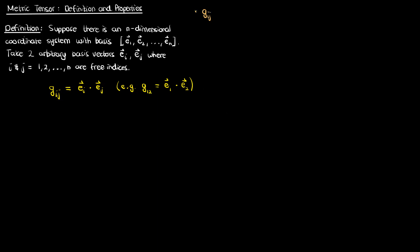From this expression you can also see why the metric tensor is written using covariant indices i and j — that is, indices that are subscripts at the bottom — because the metric tensor is created using the basis vectors, which themselves are covariant.